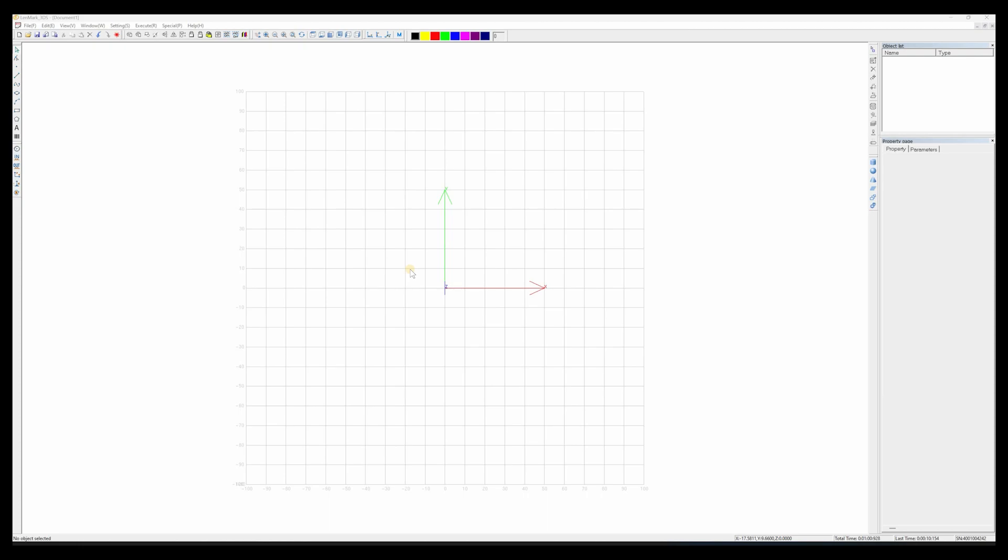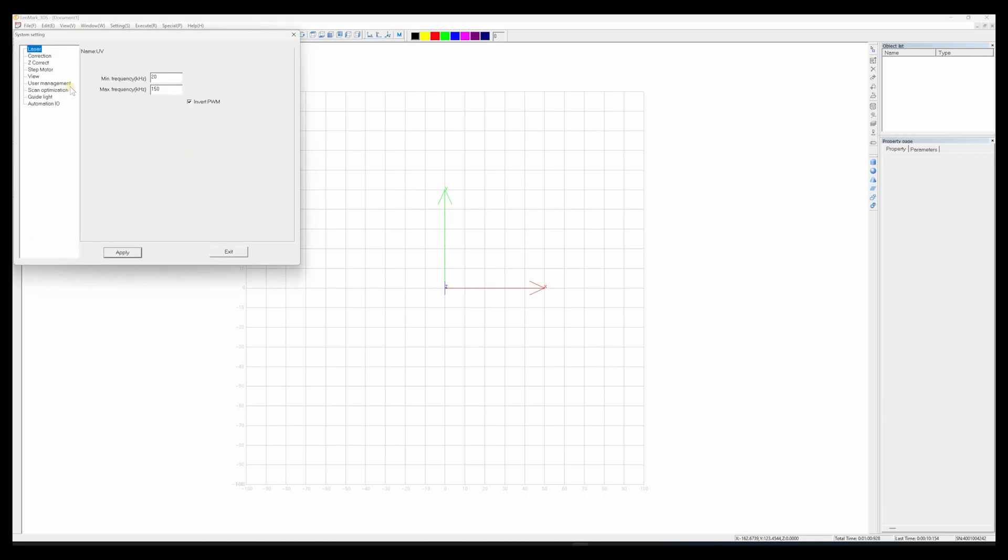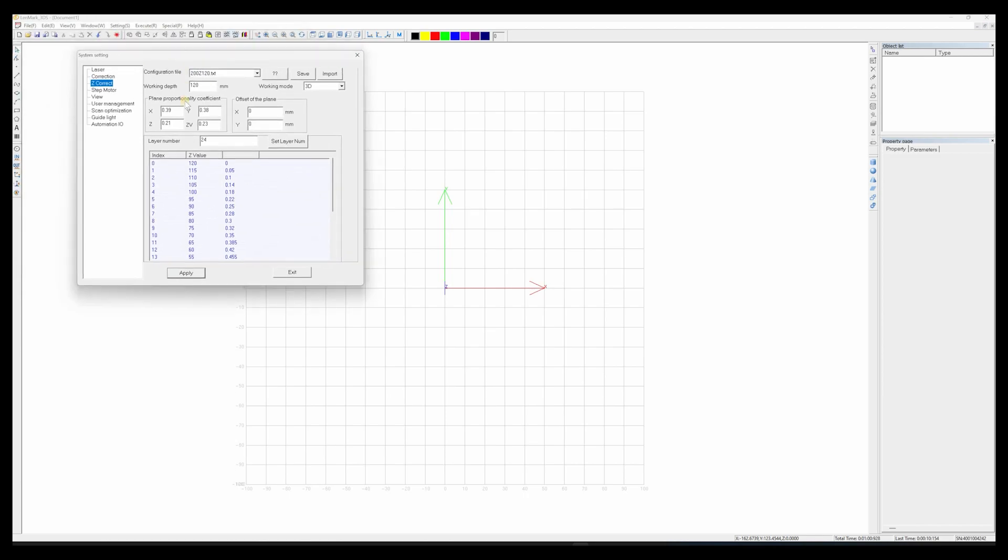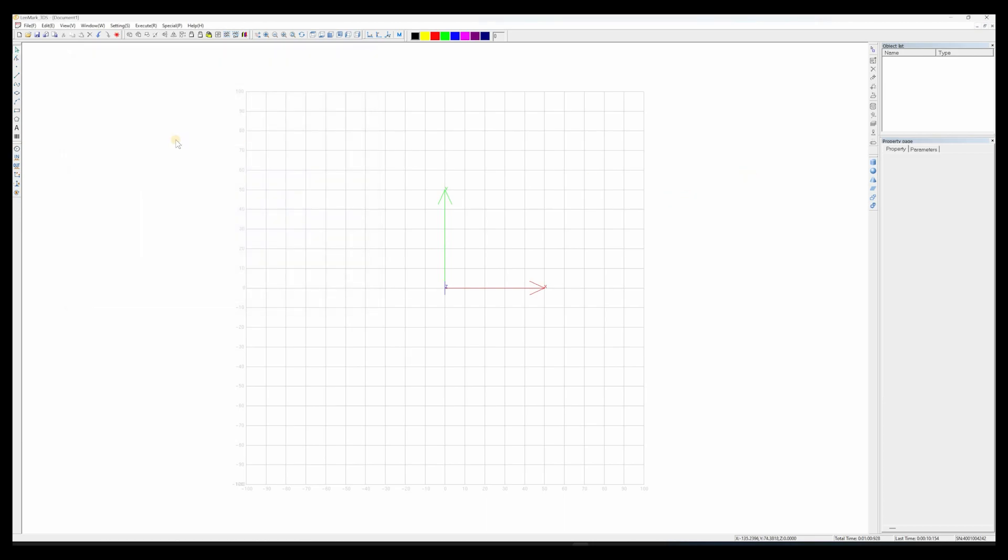So here we are in Landmark 3DS. We are going to be working in our 200 by 200 millimeter working space. So our correction file, we're at our 200 here. And you can see this is the calibration that my machine came with, this is just factory setting. We're going to be starting with this. At the end, I'll show you what my values ended up being.